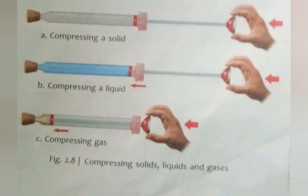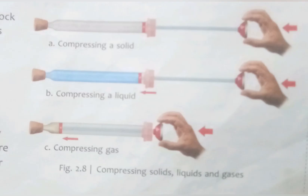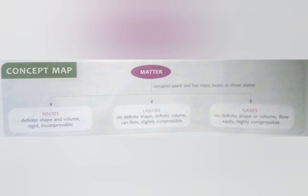So children, in this way we can distinguish the properties of solids, liquids and gases. To summarize: solids have a definite shape and volume, are rigid and incompressible. Liquids have no definite shape but have a definite volume, can flow and are slightly compressible. Gases have no definite shape or volume, flow easily and are highly compressible. Thank you, children.